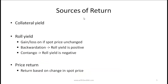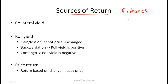From an investor perspective, what are the sources of return when dealing with commodities? As noted in the previous lecture, most investors invest indirectly in commodities, and the most common way is through the futures market. When you invest in commodities such as cotton, wheat, or gold through the futures market, you need to post some collateral. One source of yield is the collateral yield: if you are investing $1 million and posting $1 million as collateral, that collateral will be used to buy T-bills, and the yield on the T-bills is one source of return.